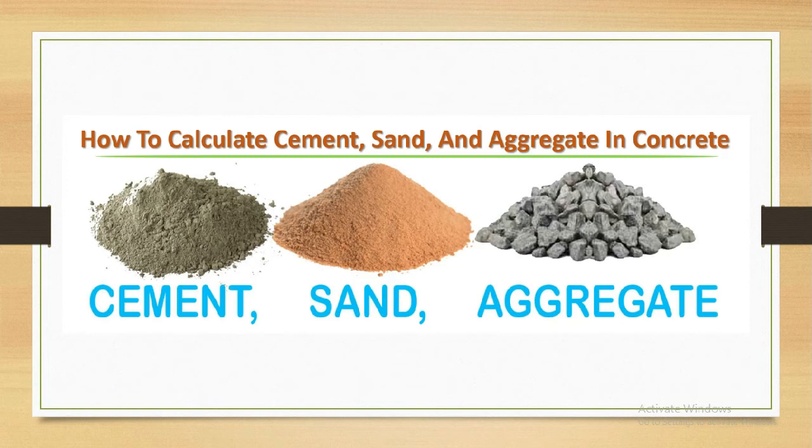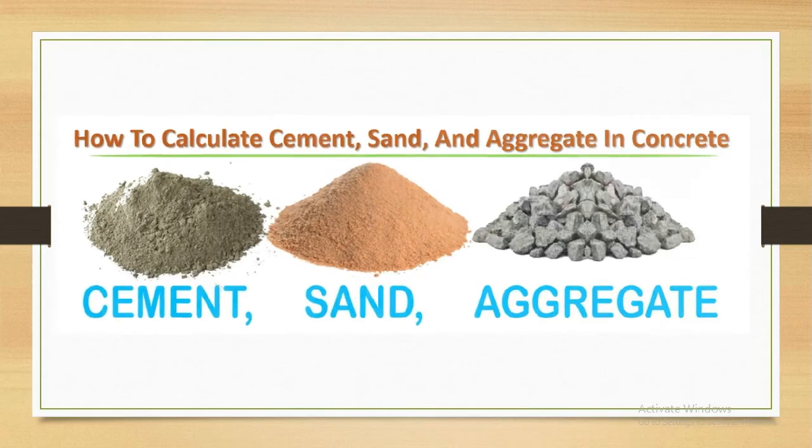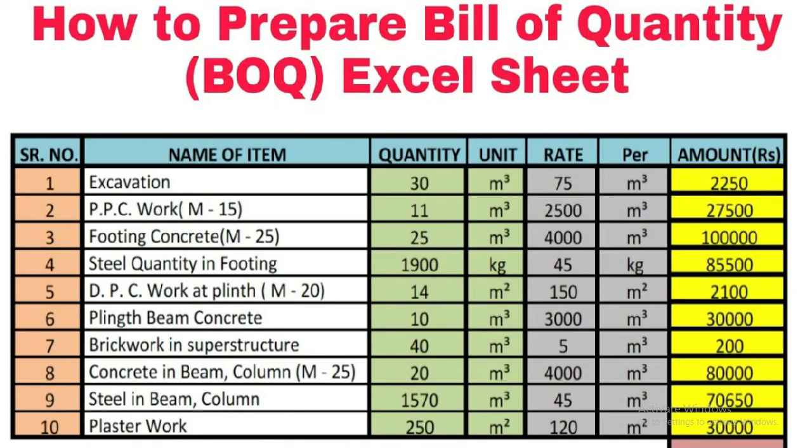How to prepare bill of quantity on Excel sheet. We will discuss this at the end of our course. We will define an Excel sheet for the bill of quantity, but we will discuss what is bill of quantity. Here you can see, here is serial numbers and name of items which we will work on the project like excavation, PCC work M15 grade concrete, footing concrete M25, steel quantity in footing. And in the next column you can see the quantity and other one unit and their rate. And here we multiply the rate with quantity to produce the bill of quantity, which is the duty of quantity surveyor.